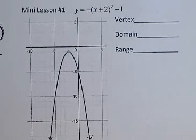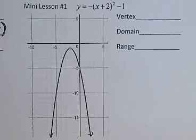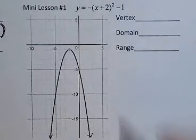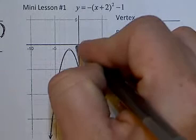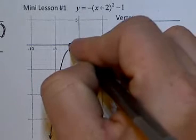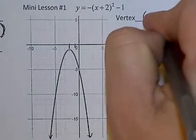Second example. This time we have a parabola that opens downward. We have a vertex at (-2, -1).